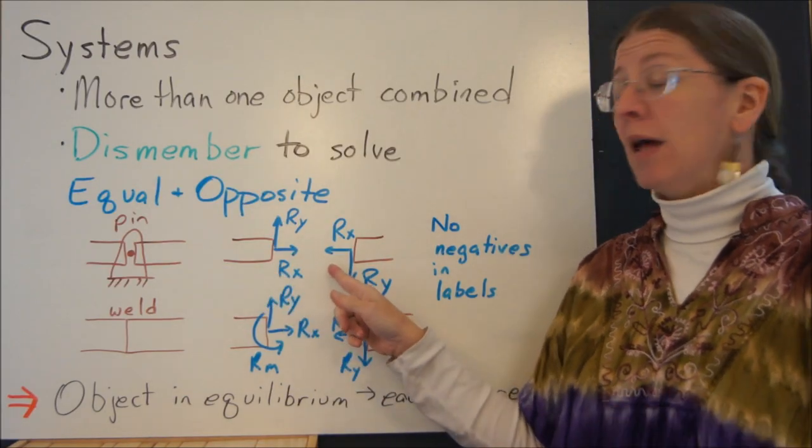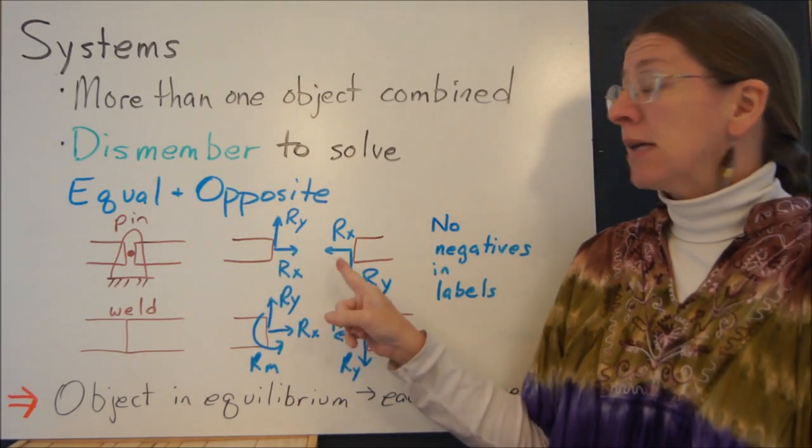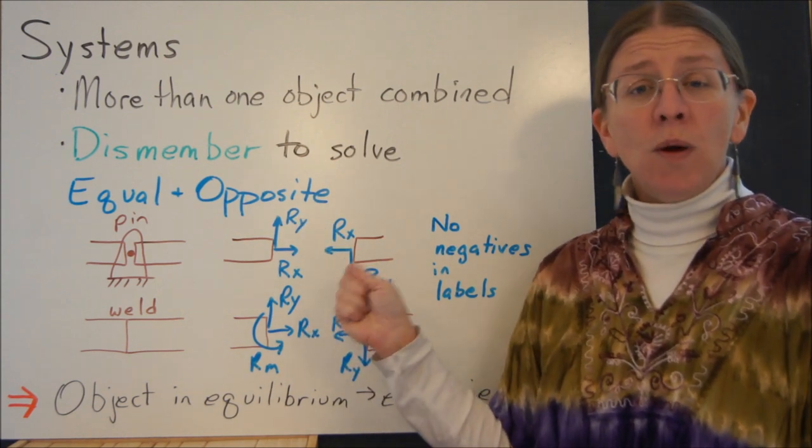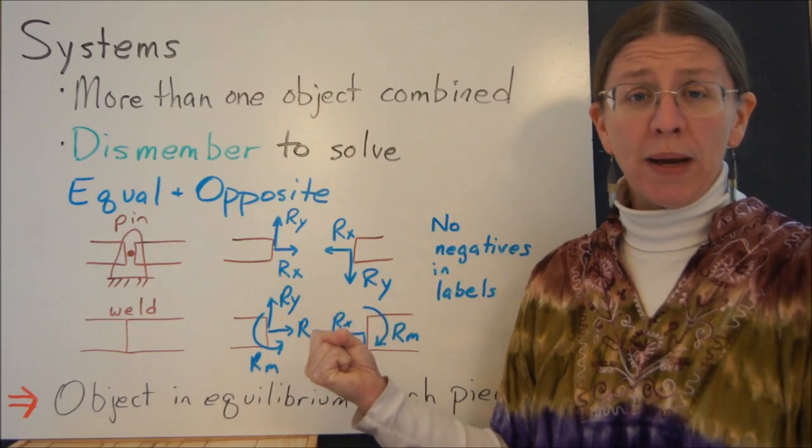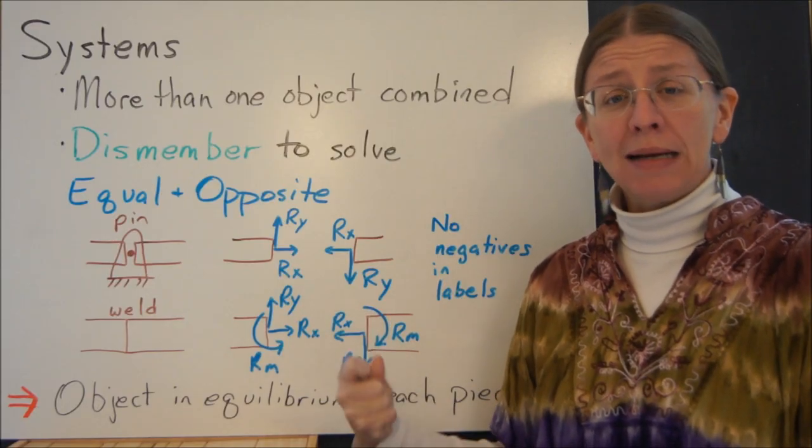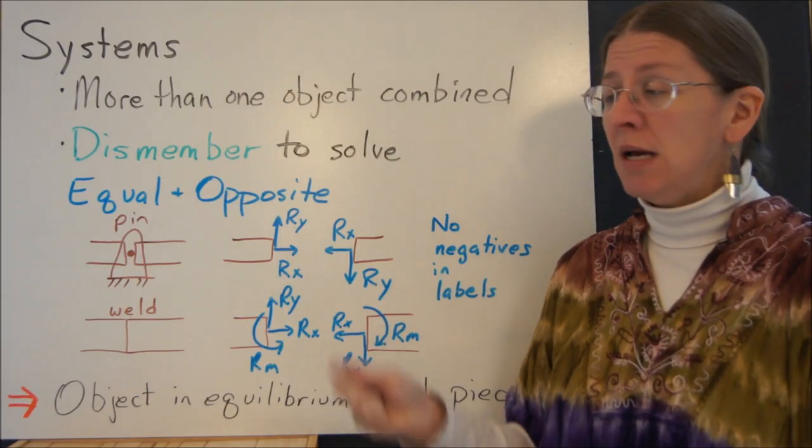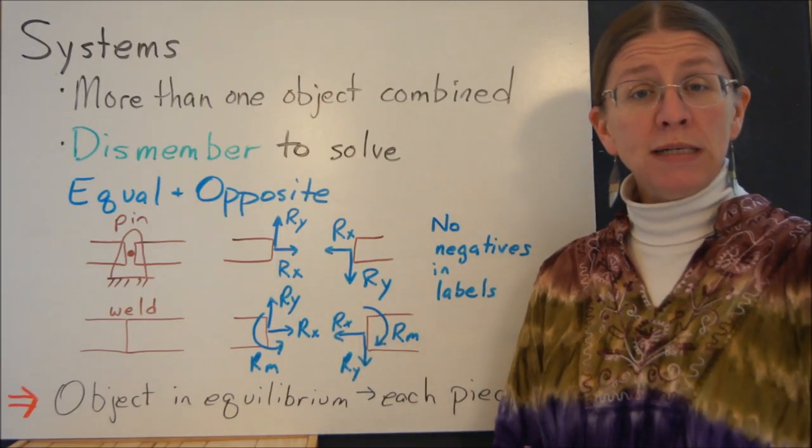So if you take apart a pin, you will have these two forces. Notice there are no negative signs here. This is not ry and minus ry. Because when we label our drawings that we're drawing by hand, we're actually using the magnitudes of these forces, not some sort of vector representation.